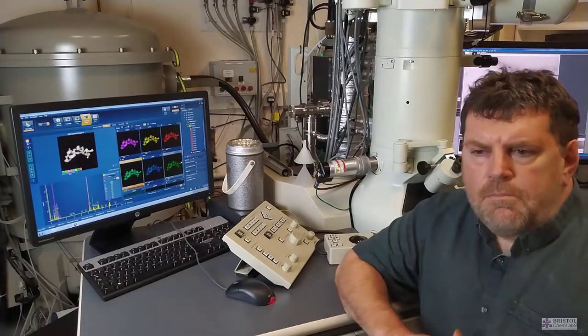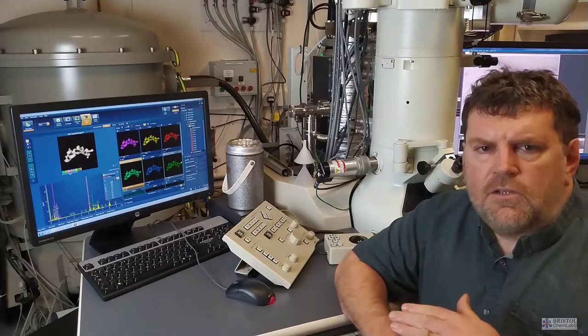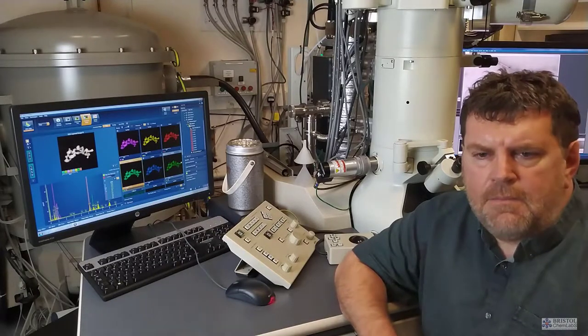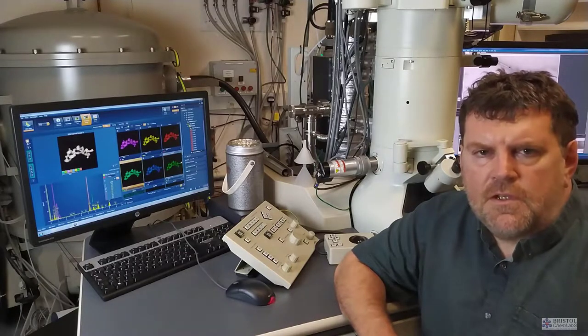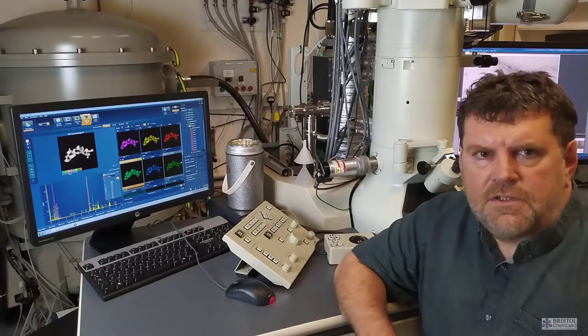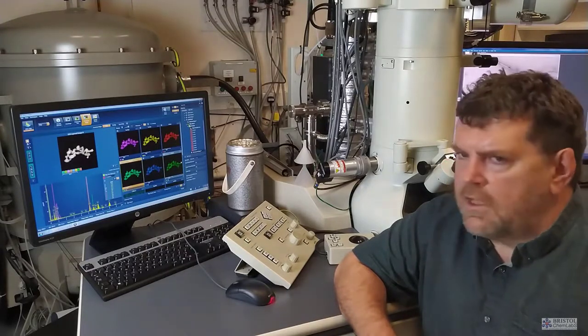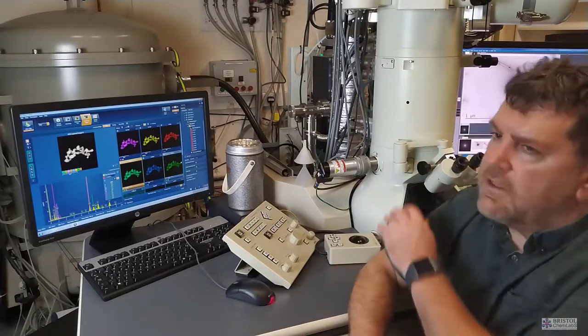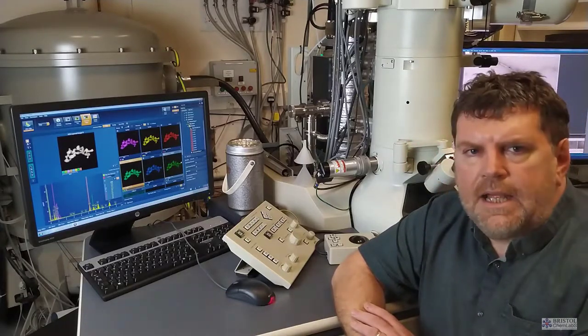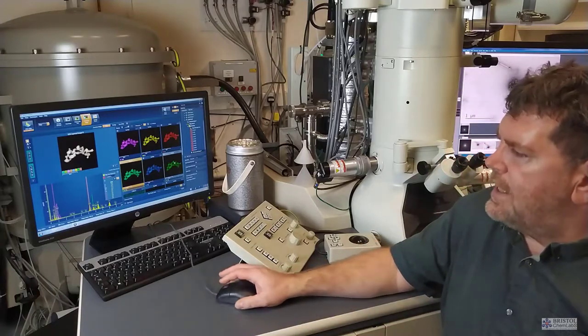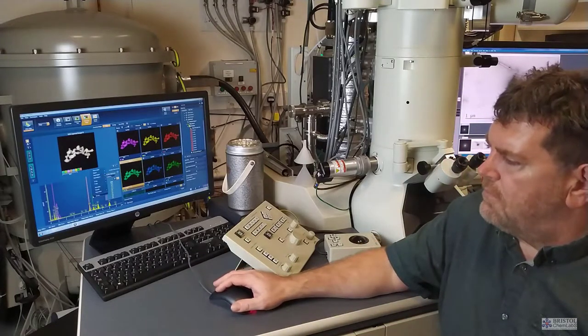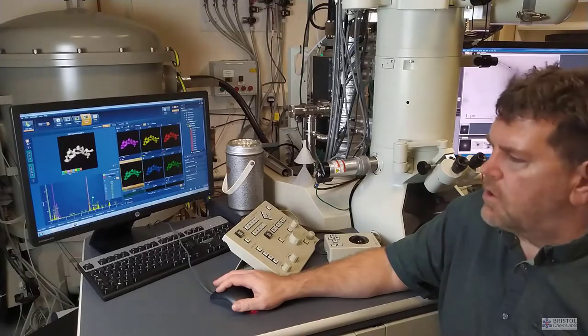The electron beam is still interacting with the sample. We're predominantly interested with the electrons that are transmitted through the sample to generate an image. But X-rays are still being scattered from the surface of the sample, and there are still secondary electrons being generated. So we can collect the X-rays and use them to get a chemical signature of the material in the same way as we can on a scanning electron microscope. So we've got a similar detector attached to the column of this transmission electron microscope, which allows us to analyze materials, get the element composition, but also map the distribution.